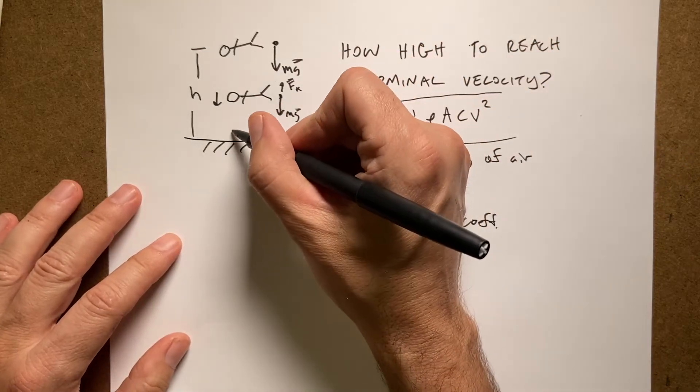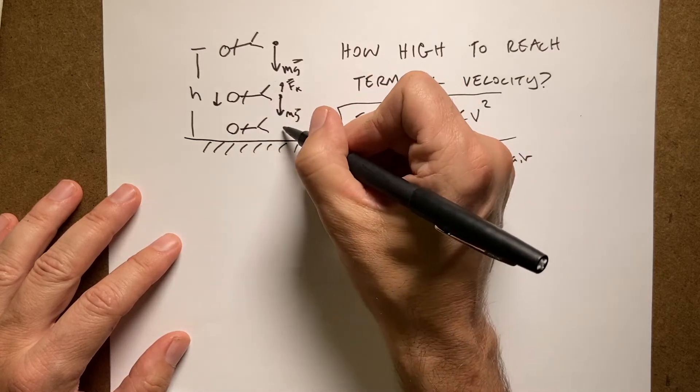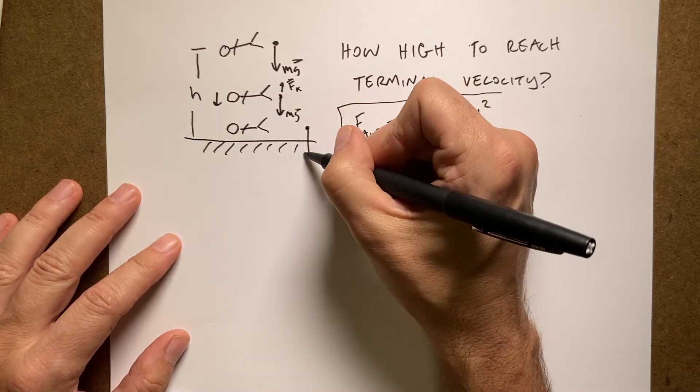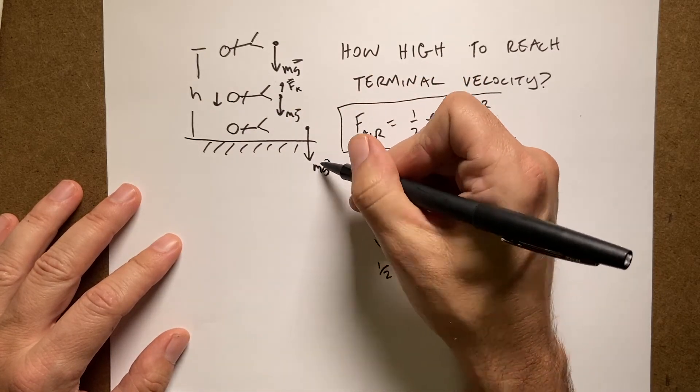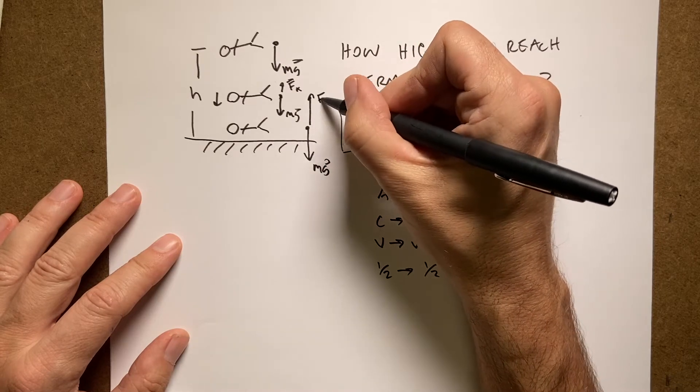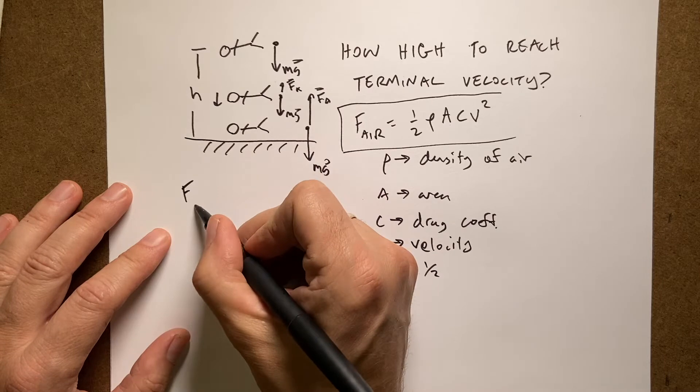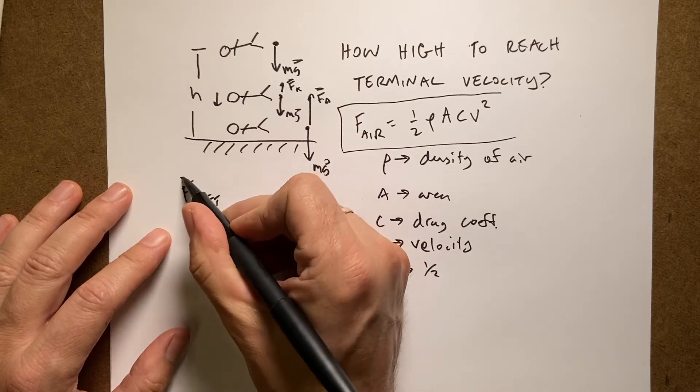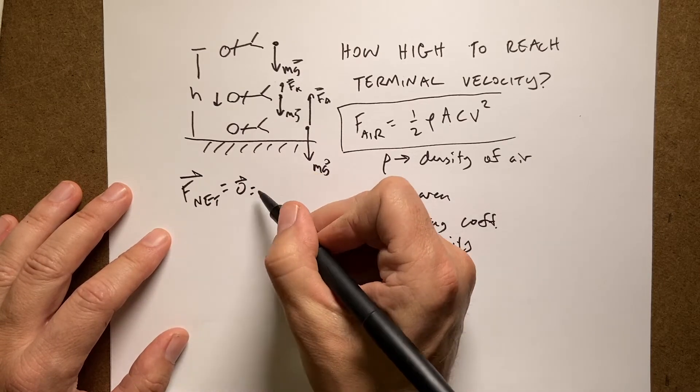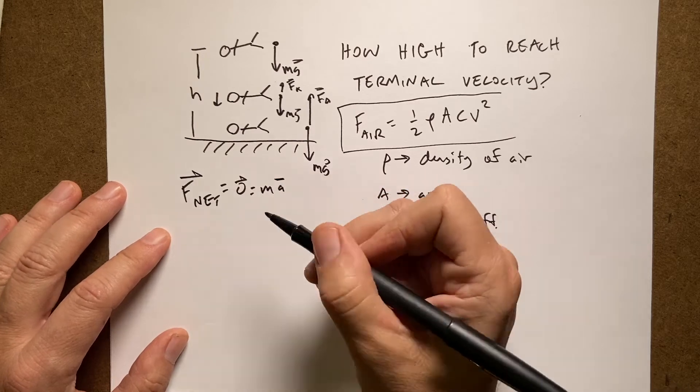Then at some point over here, the person's now moving. So there's two forces, the gravitational force and a small air drag. And so now the net force is not as much so that the person's acceleration will not be as much. But eventually, the person gets to this position where the two forces are equal. And then the net force is zero. When the net force is zero, the acceleration is zero. And that's terminal velocity.